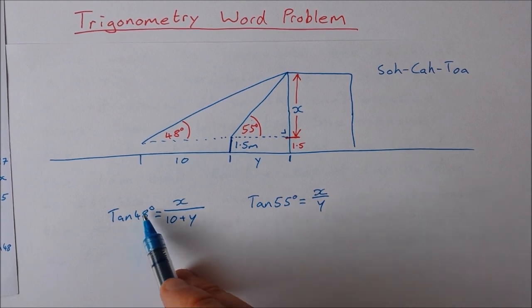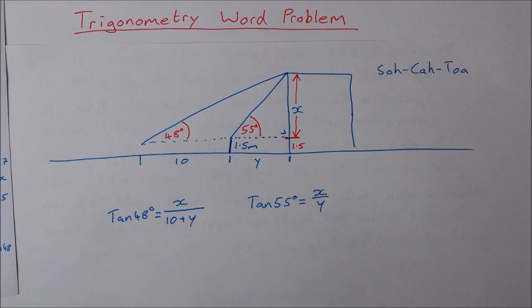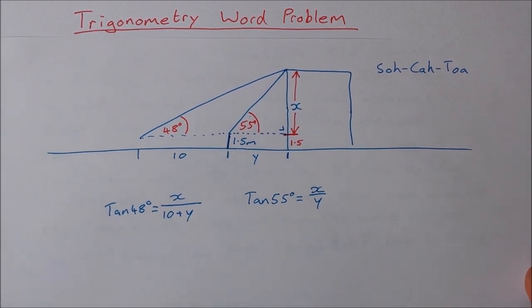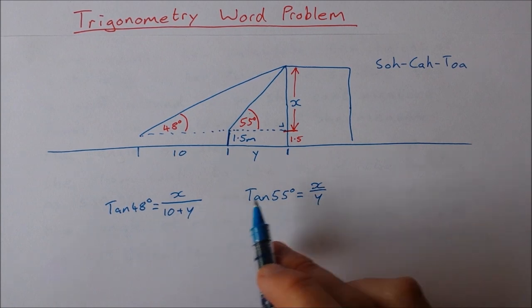Now a lot of people might start calculating out this tan of 48 and tan of 55 and putting it in. There's really no point in doing that just yet. It's just going to bring in some very long decimals that we don't want to have to deal with just yet. So I have two equations with two unknowns.